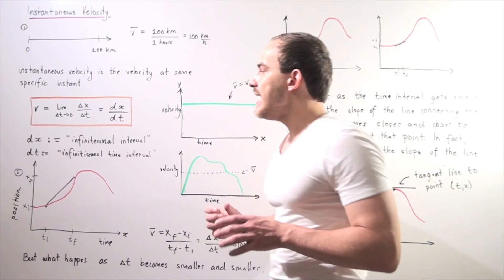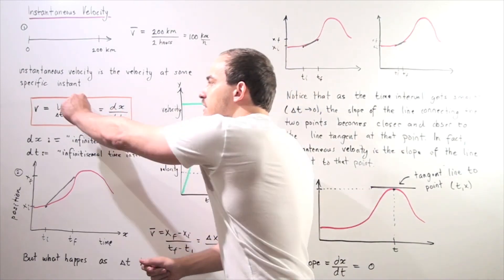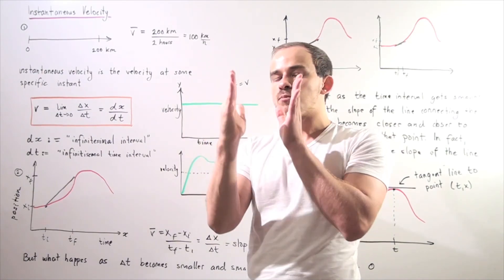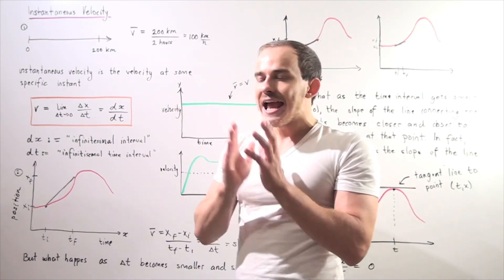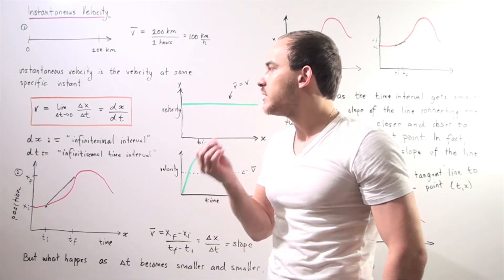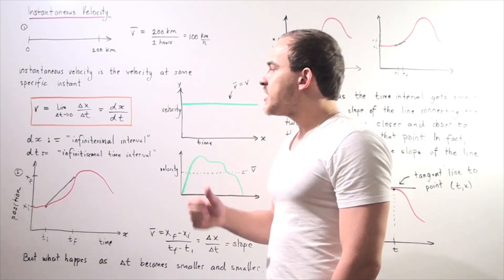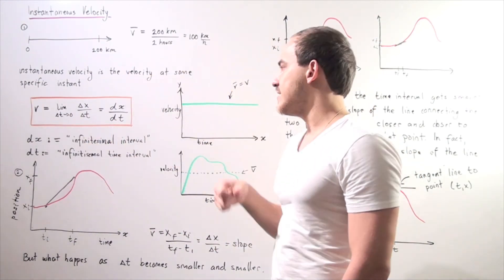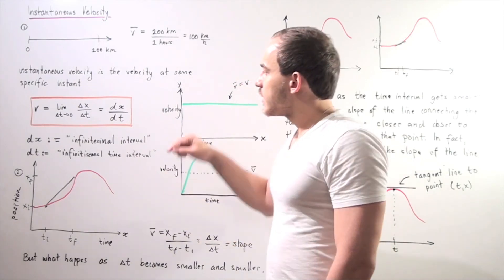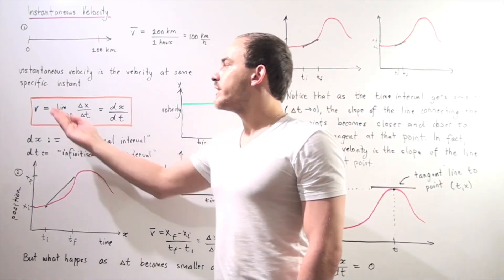In other words, as we take our time interval to be smaller and smaller, as it approaches zero, our change in displacement also becomes smaller and smaller and eventually also approaches zero. This ratio will approach some number, and this number is our instantaneous velocity. In calculus, we can represent this in the following notation: if we take the derivative of our displacement function with respect to time — dx/dt — that will also give us our instantaneous velocity. Here, dx is our infinitely small change in displacement, and dt is our infinitely small change in time.